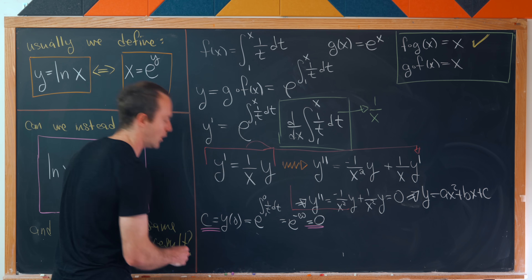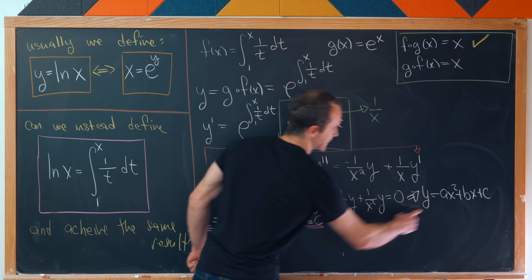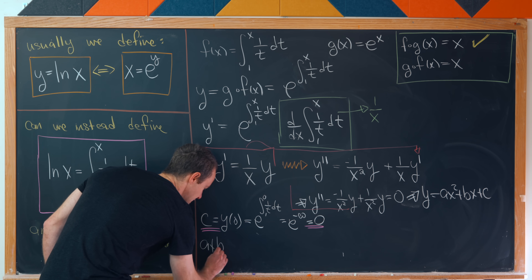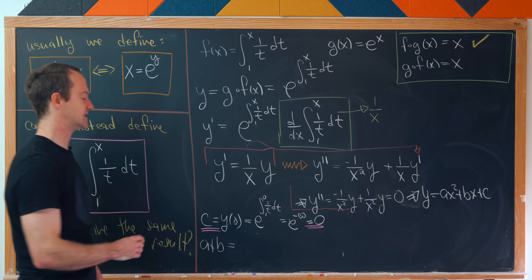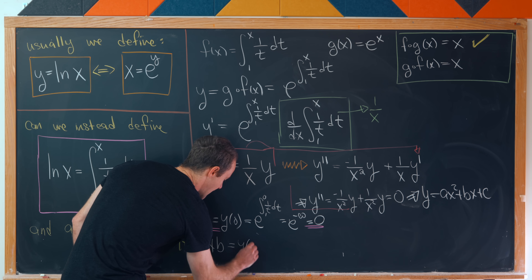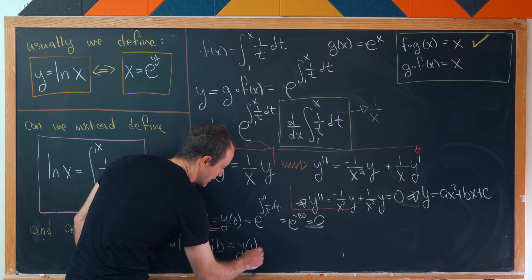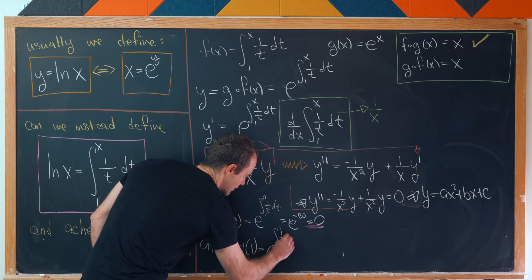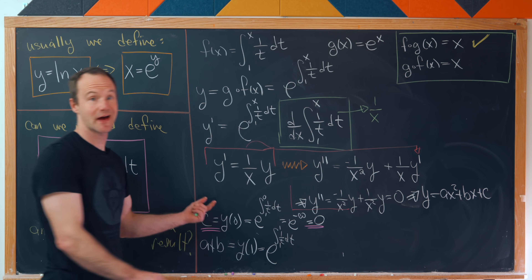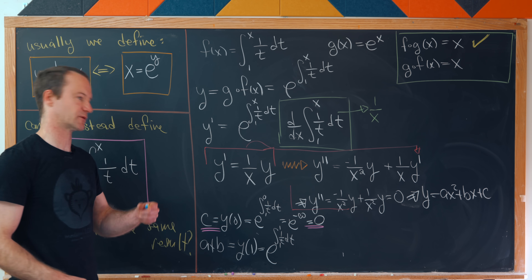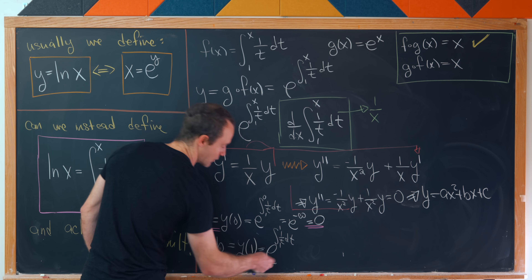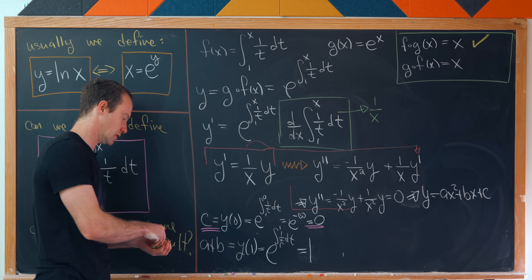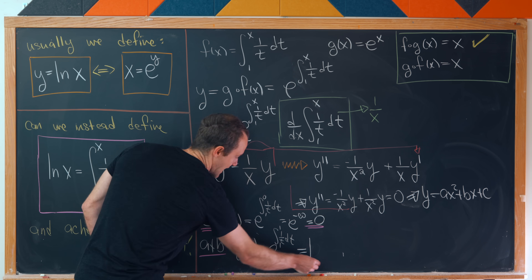Now set x = 1 in the polynomial (with c = 0): a + b = y(1) = e^(∫₁¹ 1/t dt) = e^0 = 1. So a + b = 1.